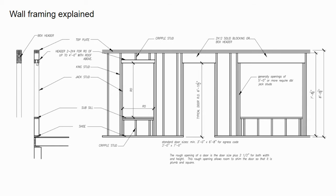The dimensions here show studs cut to 7 feet 8¼ inches if the wall height is 8 feet ¾ inch. That 8 feet ¾ inch comes from adding 6 feet 10½ inches plus 11¼ inches plus 3 inches. When you subtract the 3 inches for the top plates plus 1½ inches for the shoe plate from the total wall height, you get the stud length.